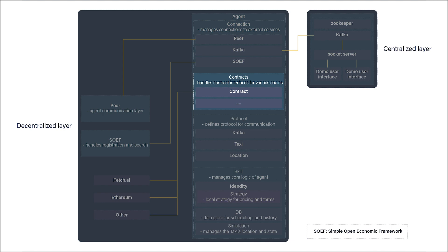The contract object handles the interface to contracts deployed or engaged with by the agent. Protocol defines the communication structure the agent supports. Skill contains the logic of the agent — how an agent defines its strategy, what connections it makes to a database, and how it's controlled by the simulation.